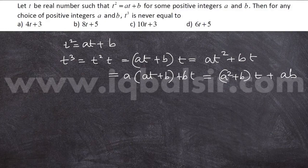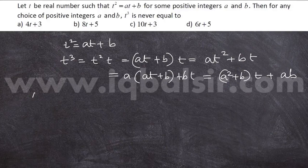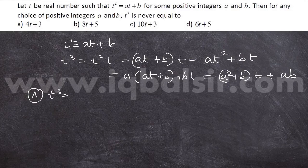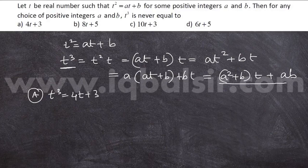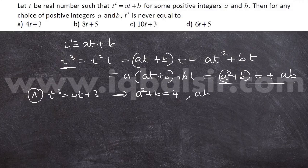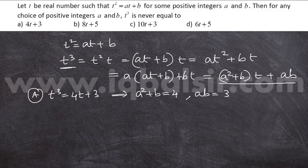Now we can check each option one by one. In the first option, t cubed is equal to 4t plus 3. When you compare with t cubed is equal to a squared plus b into t plus ab, we have a squared plus b is equal to 4, ab is equal to 3. It is given that a and b are positive integers.